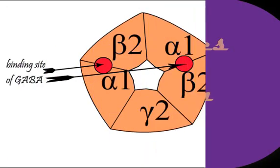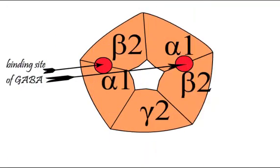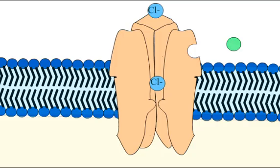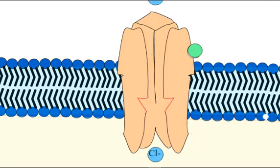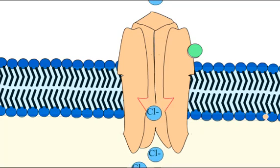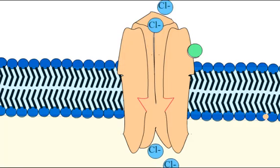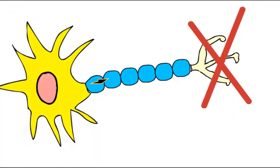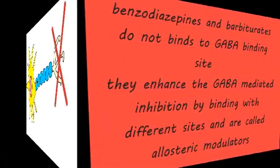The binding site of GABA is located between the alpha and beta subunits of the GABA-A receptor. When the ligand GABA binds to the receptor, a conformational change occurs, causing opening of the receptor pore. This allows chloride anions to pass down an electrochemical gradient, hyperpolarizing the resting potential and making it more difficult for excitatory neurotransmitters to depolarize the neuron and generate an action potential. The net effect is typically inhibitory, reducing the activity of the neuron.